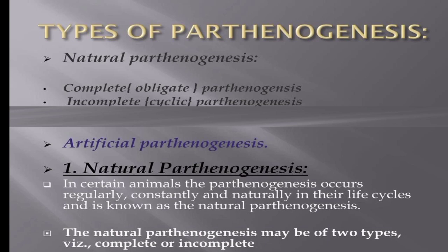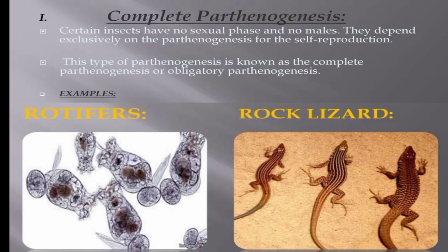There are two types of parthenogenesis: natural parthenogenesis and artificial parthenogenesis. Natural parthenogenesis may be of two types: complete or obligate parthenogenesis, and incomplete or cyclic parthenogenesis. In certain animals, parthenogenesis occurs regularly, constantly, and naturally in their life cycles. Certain insects have no sexual phase and no males, and they depend exclusively on parthenogenesis for reproduction. This is known as complete or obligatory parthenogenesis.